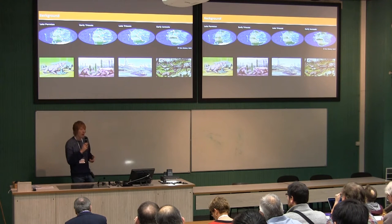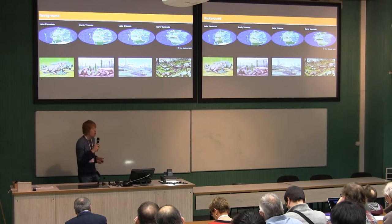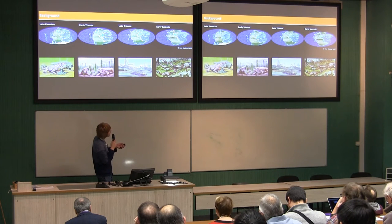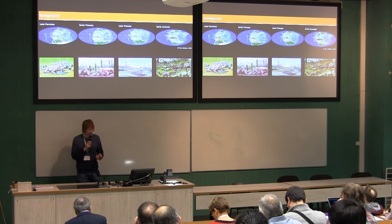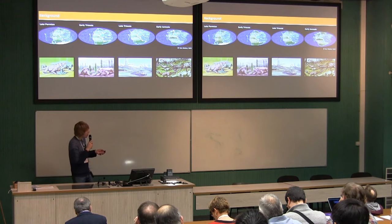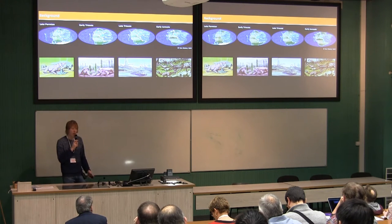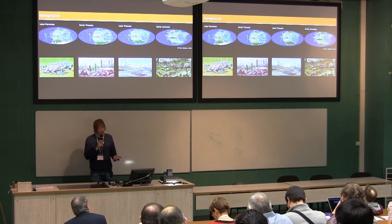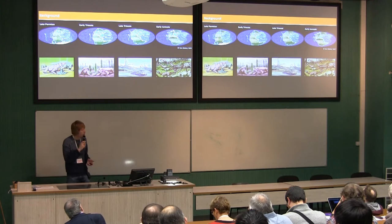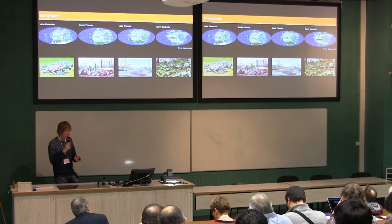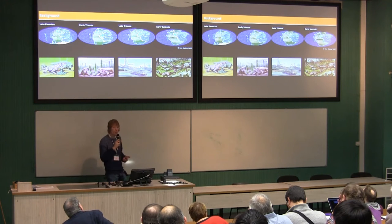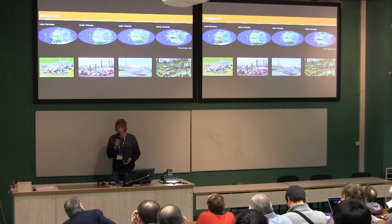The Triassic is also an important interval because it records a major faunal transition among terrestrial vertebrates. We go from late Permian ecosystems dominated by synapsids like Gorgonopsians and Dicynodonts, to ecosystems by the end of the Triassic that are overwhelmingly dominated by archosaurs — by dinosaurs, pterosaurs, crocodylomorphs and their kin. We see a fundamental shift in the dominant groups of terrestrial vertebrates through the Triassic.